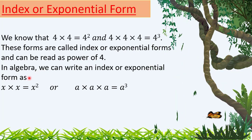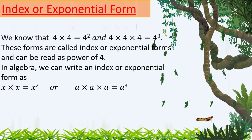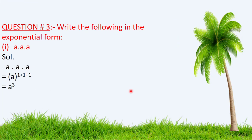In algebra, we can write an expression in index or exponential form. Question Number 3: write the following in exponential form. Note that the dot denotes multiplication. For the first part — a · a · a · a — in the solution, the exponent of a is 1. To write this in exponential form, we add up the exponents of a and write a only once. The answer is a raised to the power 4.